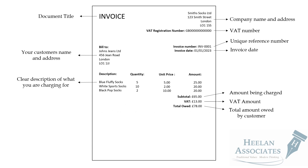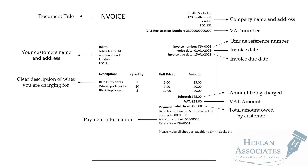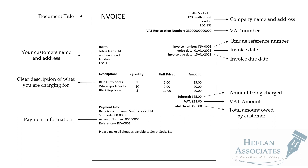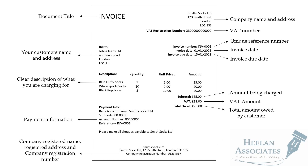Then the total amount owed by the customer and the invoice due date. Include any payment information at the bottom of the invoice stating your bank account name, sort code, account number, reference number and any terms. If you're a limited company, you'll need to add your company name, registered address and registration number at the bottom.